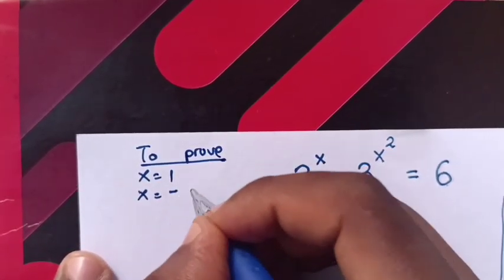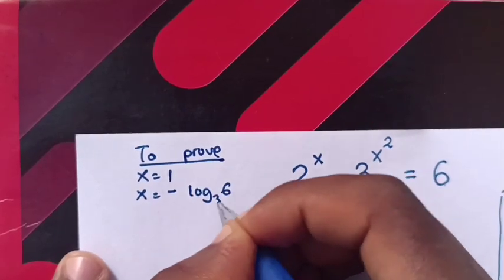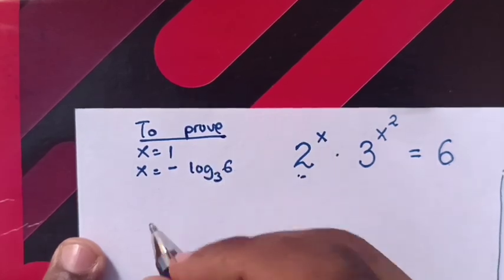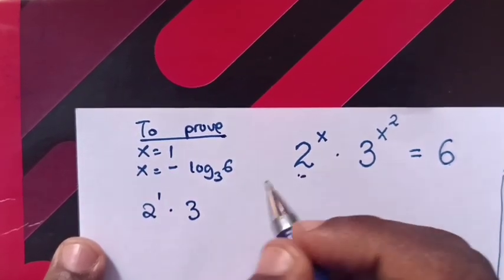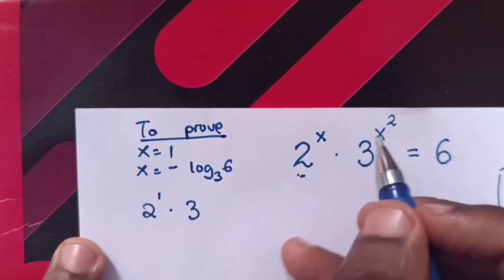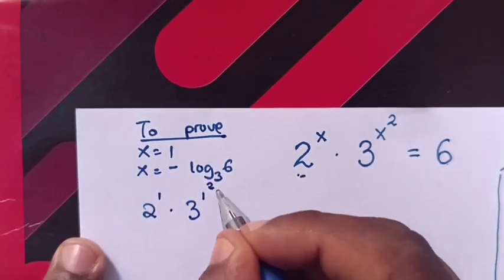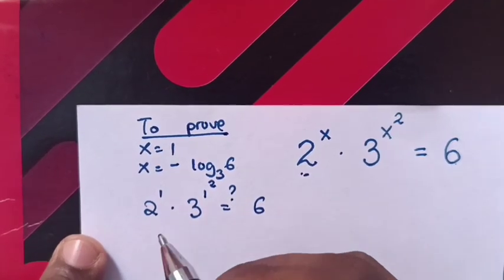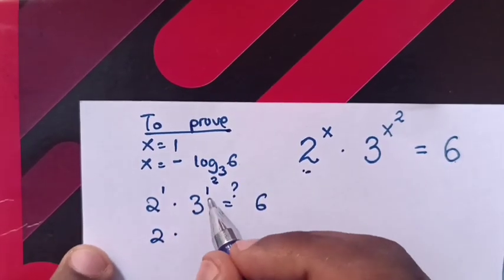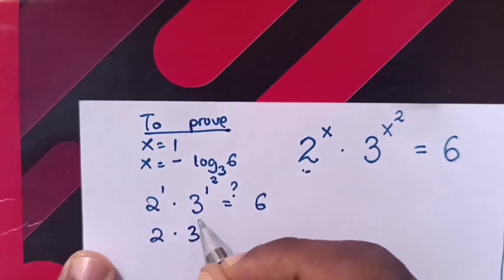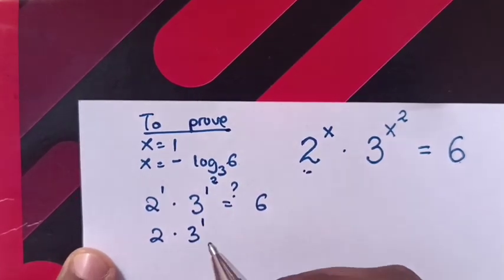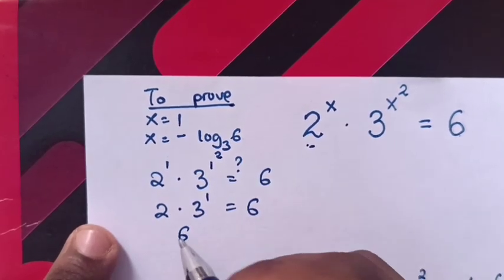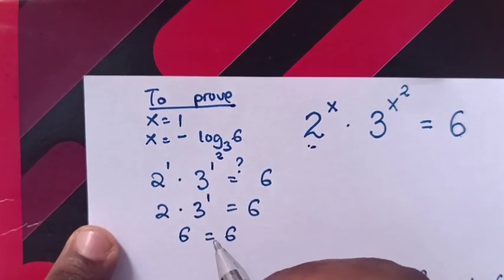The answers for x are x equals 1 and x equals negative log 6 base 3. To prove from our answer: when we substitute x equals 1 into our question, it will be 2 power 1 times 3 power 1 squared is equals to 6. So it will be 2 times 3, and 1 squared is 1, so 1 times 3 is 6 — so 6 is equals to 6. So it's true, x equals 1.